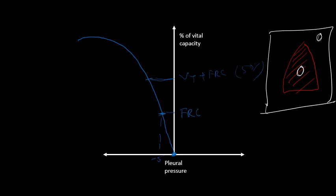So if you plot this area, this is the work done by our respiratory muscles to generate this negative pressure to expand the lungs from FRC to tidal volume. So this is the elastic work done by our lungs.